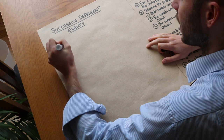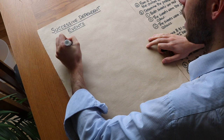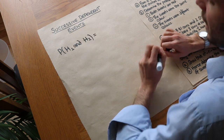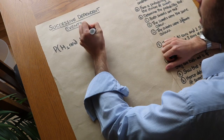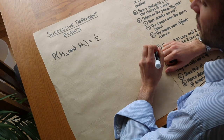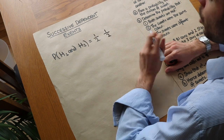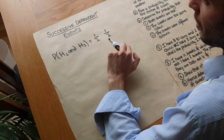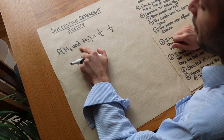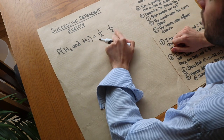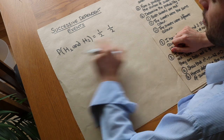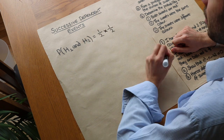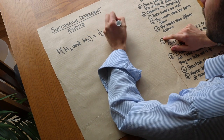We want the probability of getting heads on the first throw and heads on the second throw. The probability of heads on the first throw is a half, and on the second throw it's still a half — the coin has no memory. Whether we get heads or tails on the second throw is not influenced by the first. Because we use the word 'and', we multiply the two probabilities: a half times a half gives us a quarter.